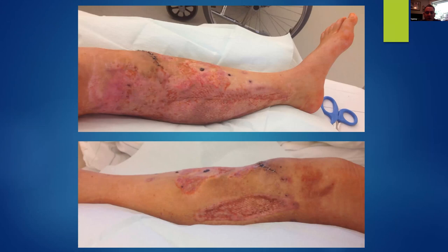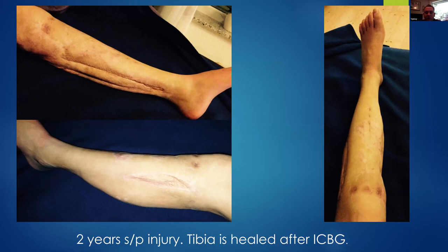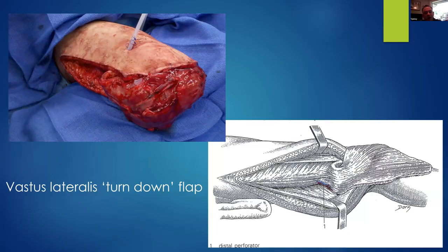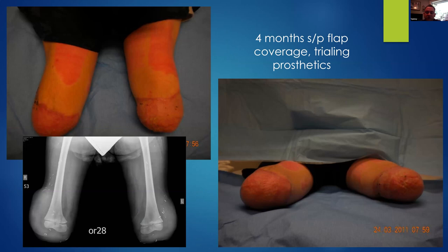Going back to our young man with bilateral through-knee guillotine amputations — another case where local muscle can be quite powerful. I found this flap in Masquelet's book: the vastus lateralis can be reflected on its perforating branches of the popliteal artery and turned to cover the distal femora. Rather than subject this young man just off pressors to bilateral free latissimus or anterolateral thigh flaps, this local muscle flap — only about an hour and a half to harvest, with skin grafting a week later — did very well. Here he is, four months after his flap coverage, ambulating on his prosthesis. He's now 15 and attending high school.